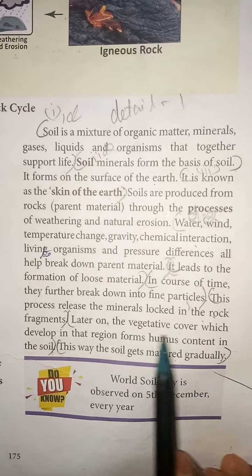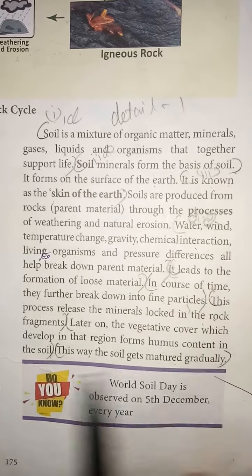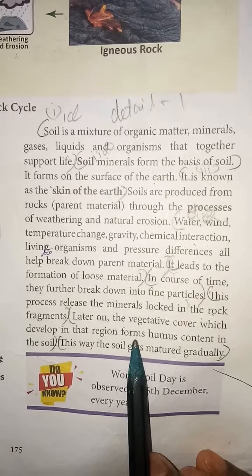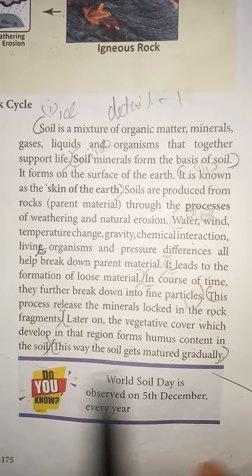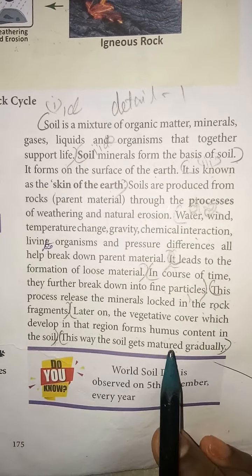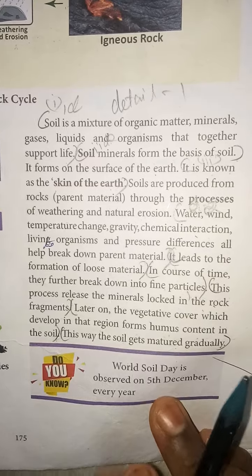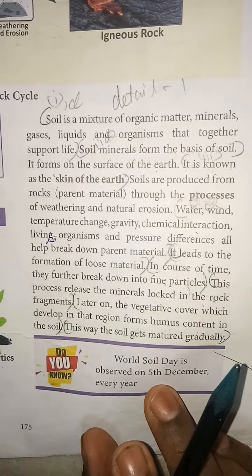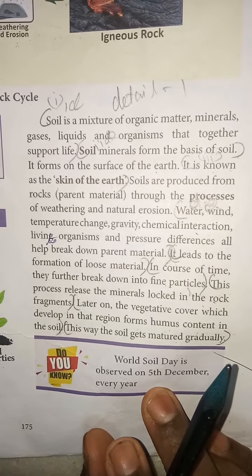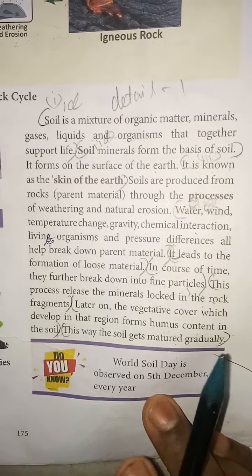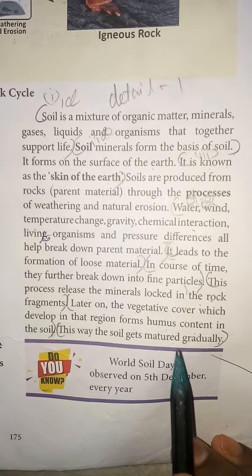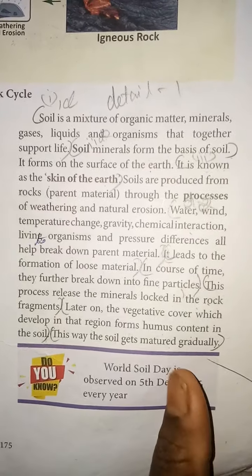Later on, the vegetative cover which develops in that region forms humus content in the soil. Humus is a substance made from dead leaves and plants. This way the soil gets matured gradually.